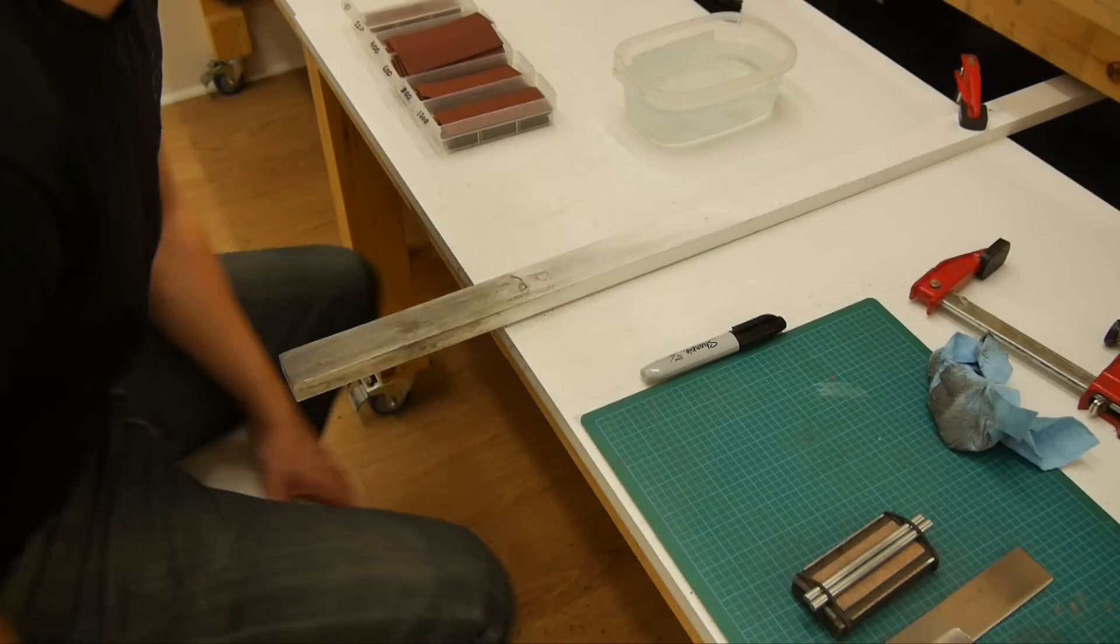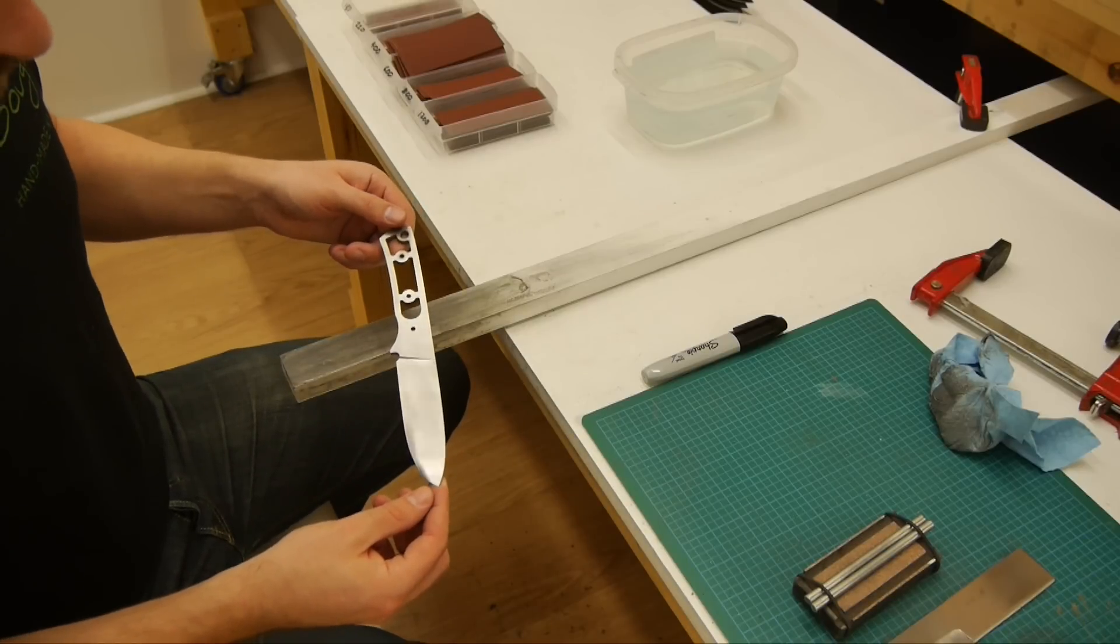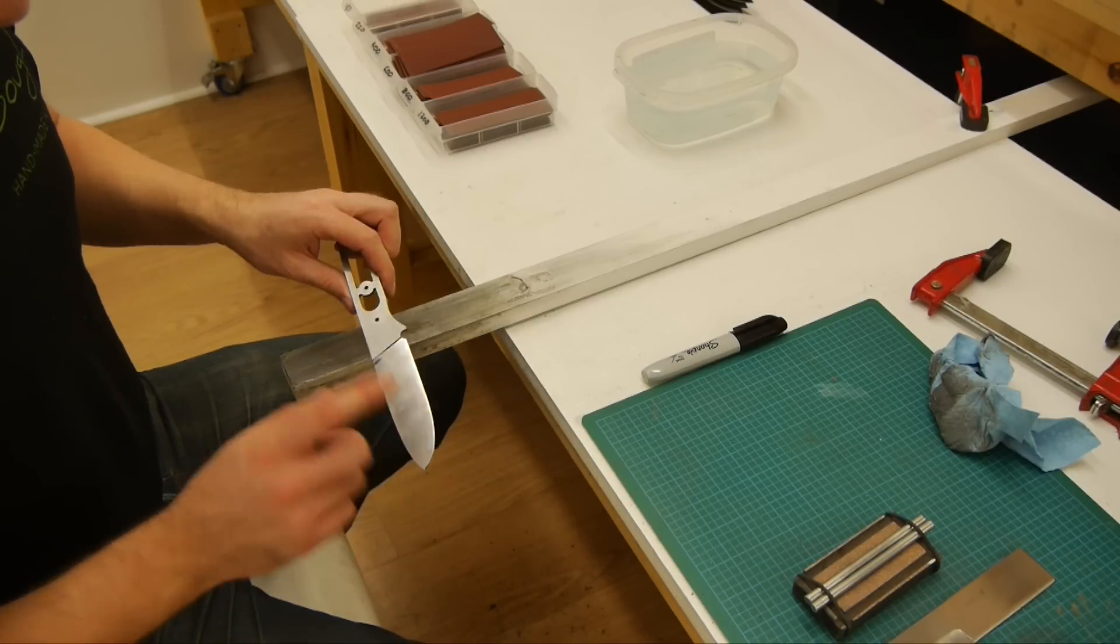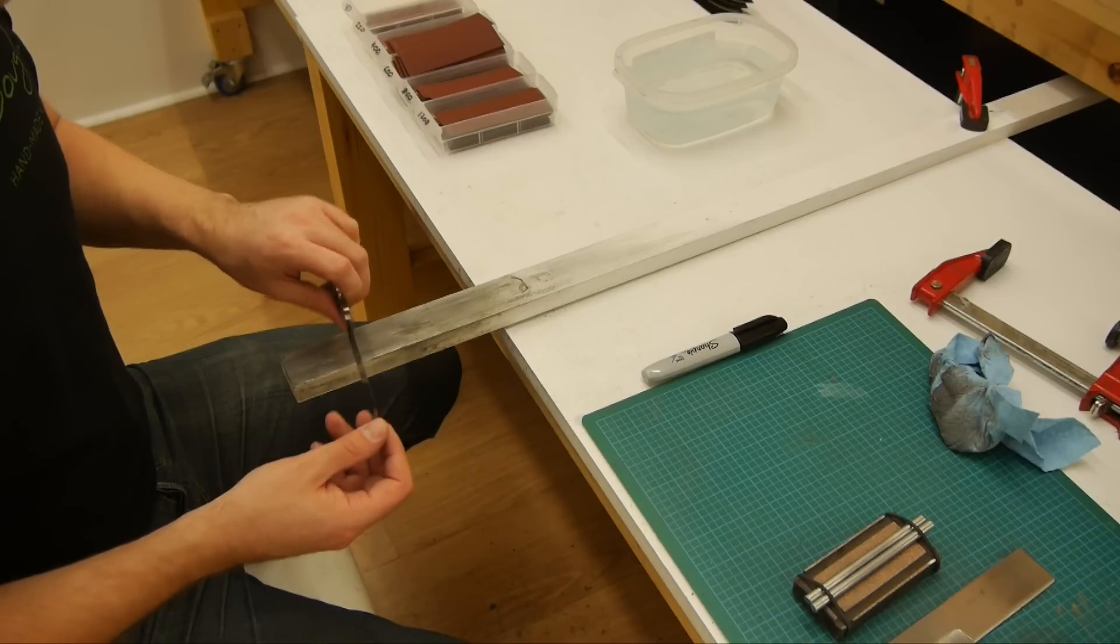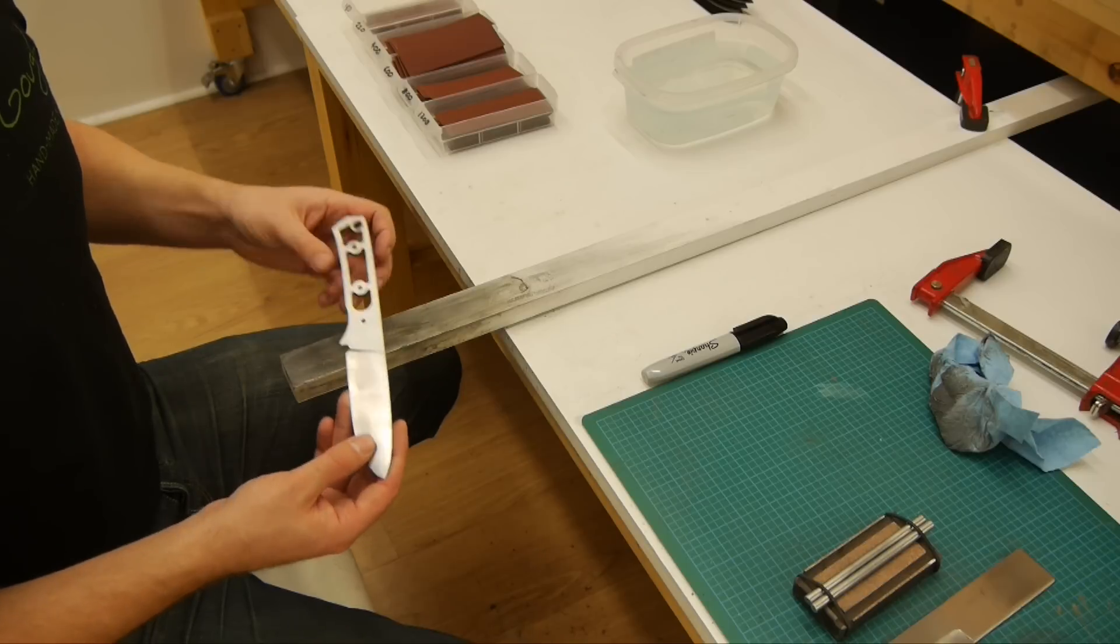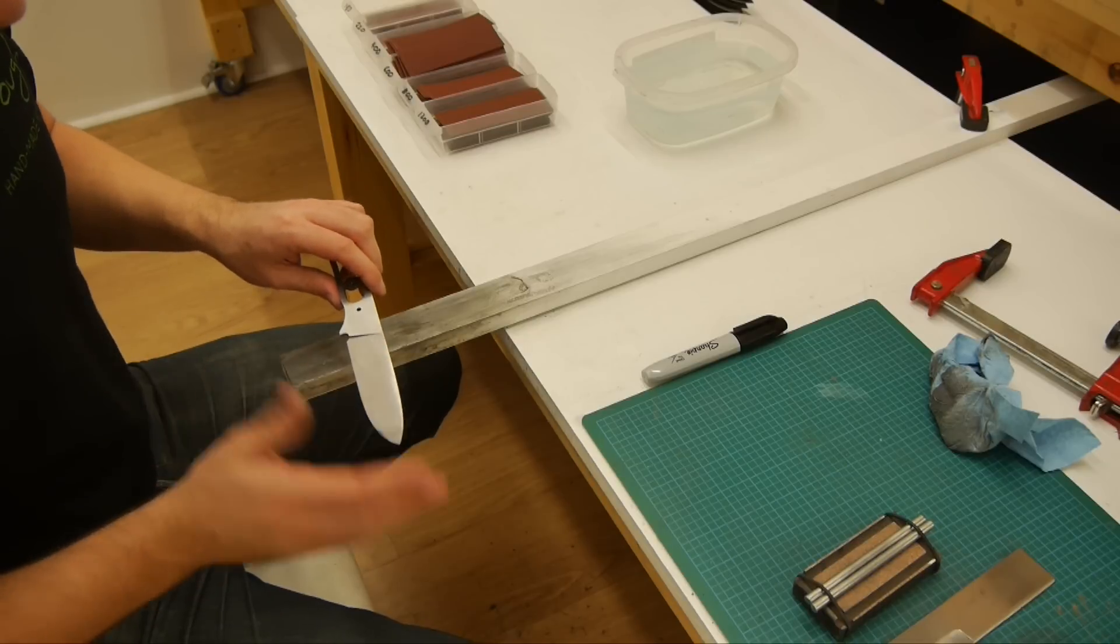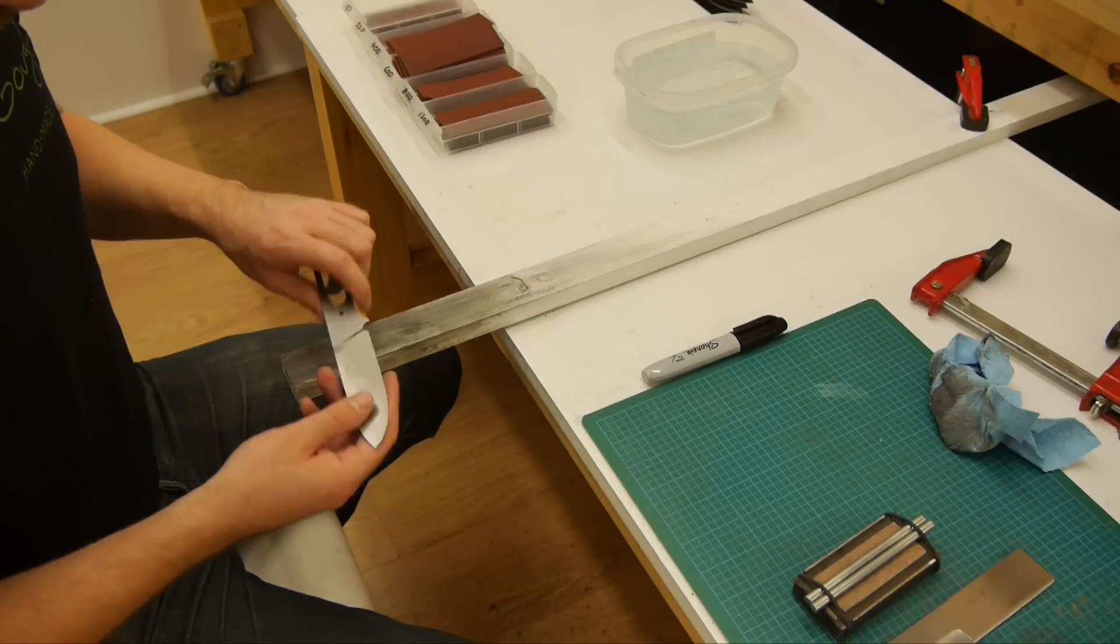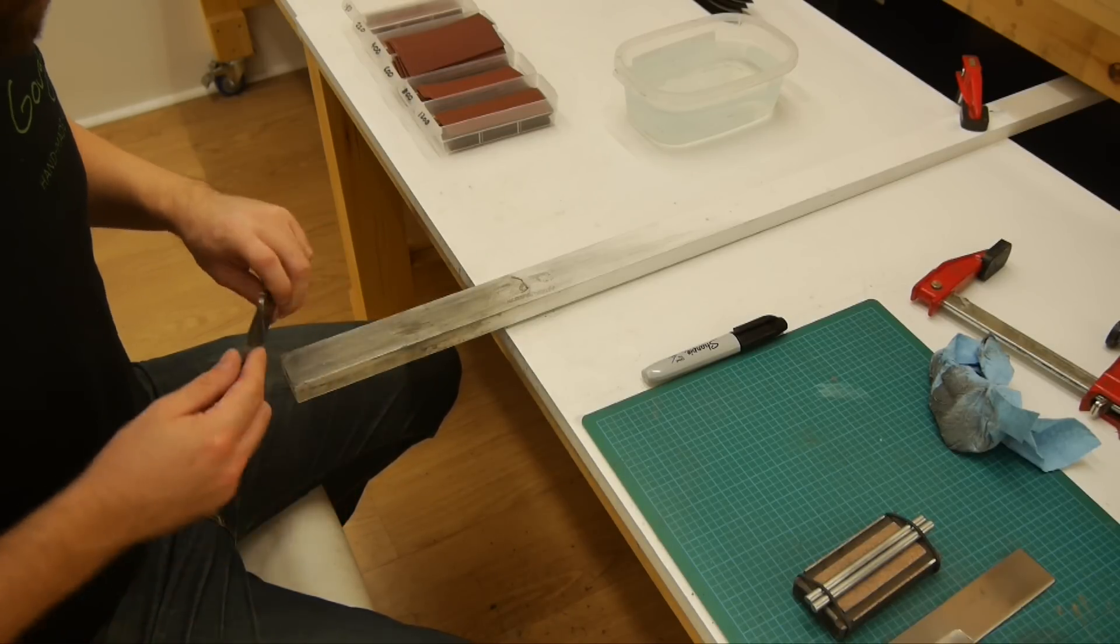All right so let's get started with our first knife blade. You can use this exact same process regardless of how rough the blade is. You just have to start at a different grit at a coarser grit. So if you've done all of your blade beveling with a file then you'll want to start maybe with 120 grit sandpaper to get the really coarse file marks out and then move upward from there. I'm going to start at 400 grit but the principle is exactly the same. So let's get started.